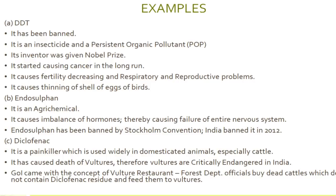The first example of such a pollutant is DDT — dichloro-diphenyl-trichloroethane. It has been banned and is an insecticide and persistent organic pollutant. Its inventor, Paul Hermann Muller, a Swiss chemist, was given the Nobel Prize for its effectiveness as a pesticide during World War II to control malaria and typhus among civilians and troops. He received the Nobel Prize in 1948.